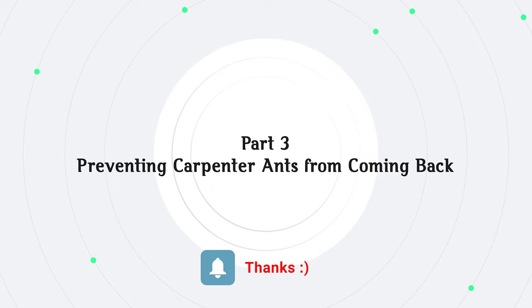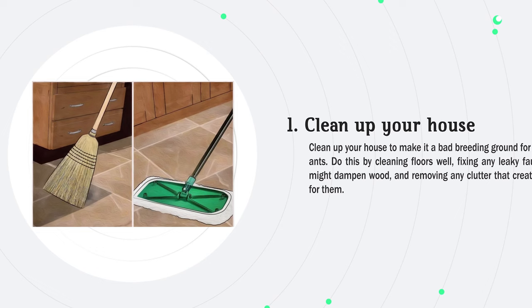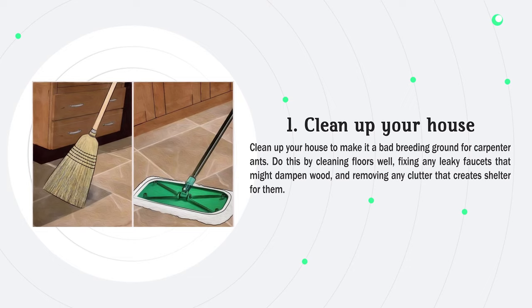Part 3: Preventing Carpenter Ants from Coming Back. Step 1: Clean up your house to make it a bad breeding ground for carpenter ants. Do this by cleaning floors well, fixing any leaky faucets that might dampen wood, and removing any clutter that creates shelter for them.